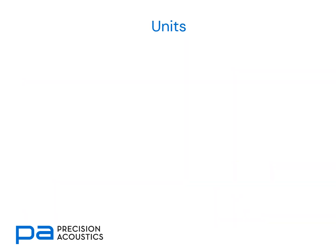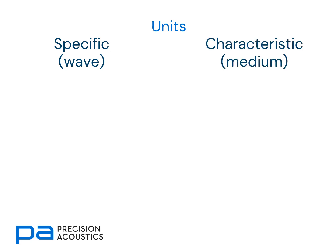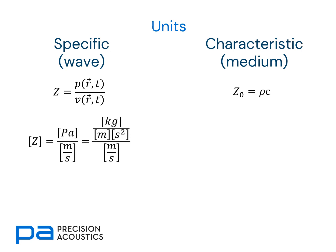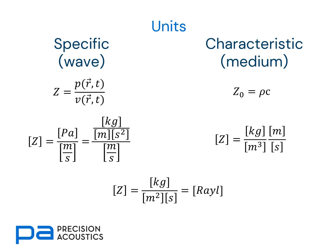We mentioned units briefly already, but let's look at the differences between specific wave-like and characteristic medium-like units. Starting with the two definition equations: for specific impedance, the units are Pascals divided by metres per second, which becomes kilograms per metre per second squared divided by metres per second. For characteristic impedance, we have kilograms per metre cubed multiplied by metres per second. Both of these quantities simplify to kilograms per metre squared per second — which is the Rayl.